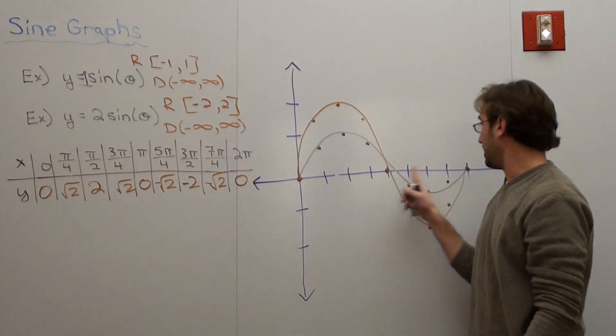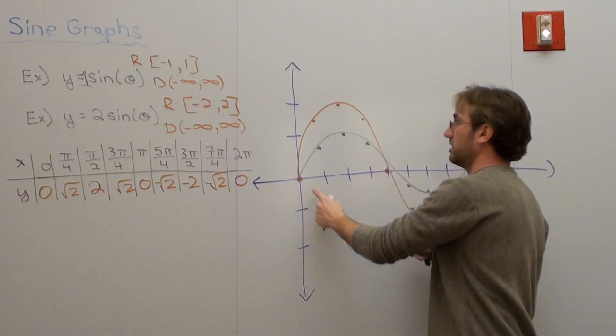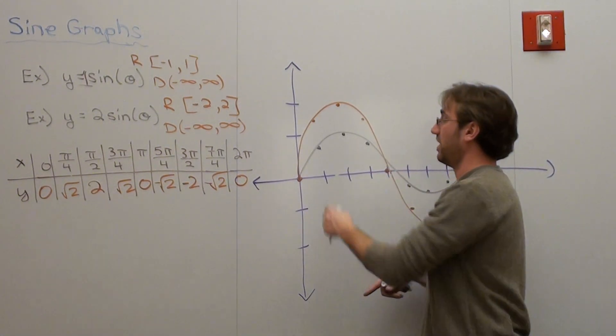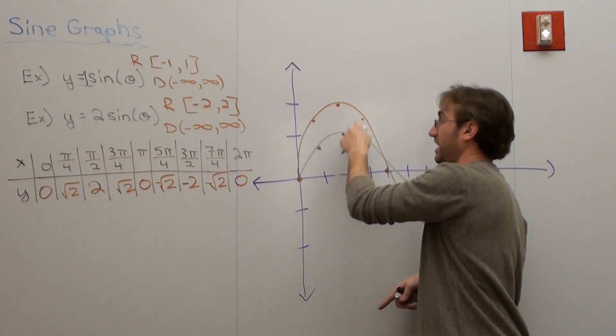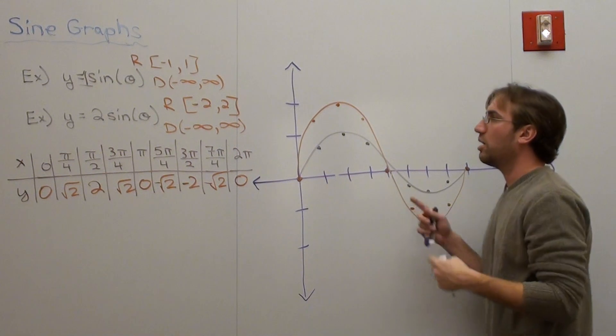It doesn't affect the x-intercepts either. It still hits here, still hits here, still hits here. What it does do is it affects when x is not zero, then it's going to make it higher or it's going to make it lower. But that's really cool.